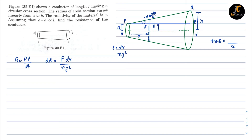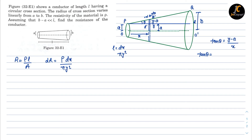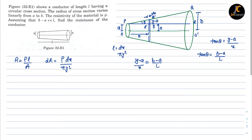The base height is A and the complete height is Y, so the remaining perpendicular is Y minus A. Also, taking the complete triangle P Q R, tan theta equals QR upon PR, which is B minus A upon L, where L is the length of the conductor. Equating these two: Y minus A upon X equals B minus A upon L, which gives L times Y minus A equals X times B minus A. Now let's find the value of dy by dx.